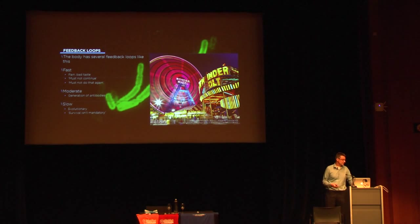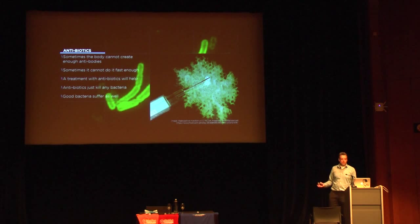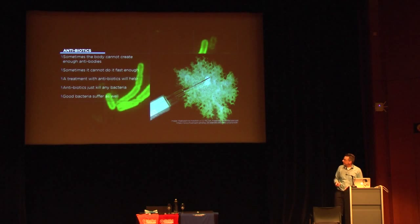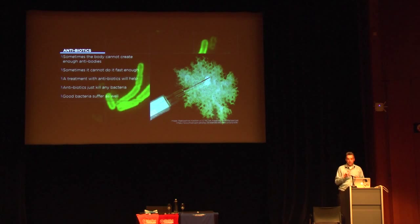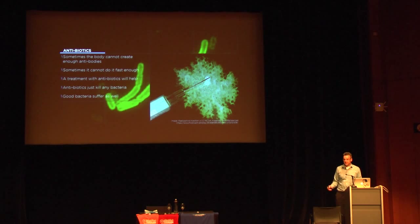Another cornerstone that really helped the human race progress was the discovery of antibiotics. Antibiotics are great when your body can't produce enough antibodies quickly enough — to prevent you from dying you get a shot of antibiotics; every bacteria in place is killed, giving you time to survive and recover. The good bacteria were killed as well, but you survived.